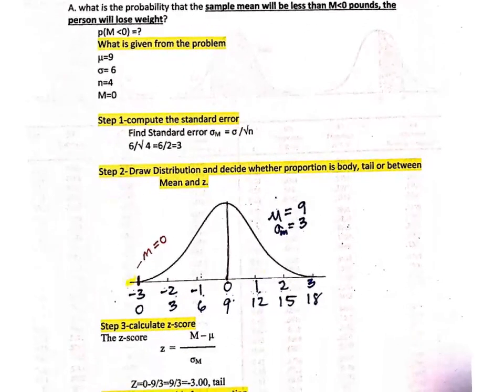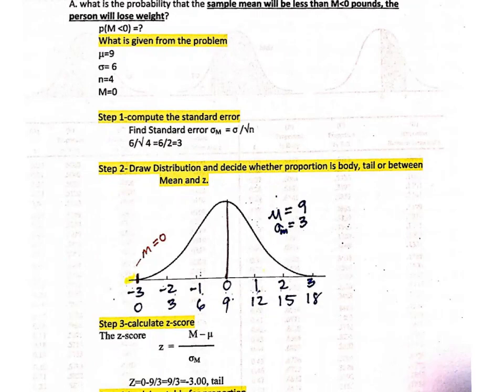We'll draw the distribution again with z-scores 0, 1, 2, 3 and negative 1, negative 2, negative 3. The corresponding standard error of the means are 9, 12, 15, 18 on the positive side, and 6, 3, 0 on the negative side. We're looking for a mean less than zero, which is way out on the left-hand side in the tail — an extreme value. We recall that this tail goes out to infinity and will never touch the x-axis.